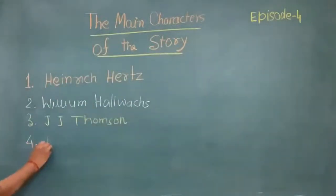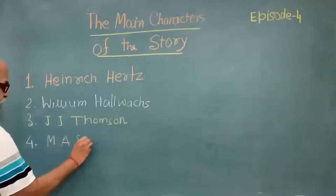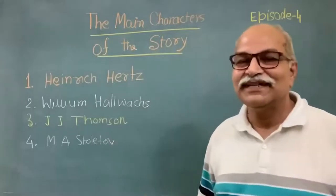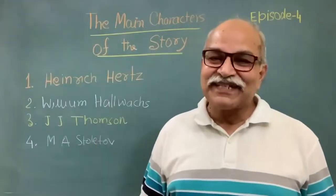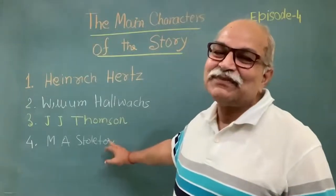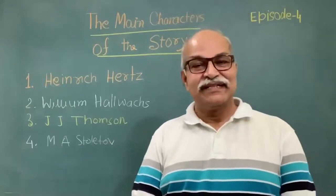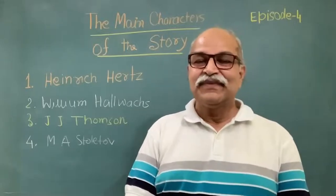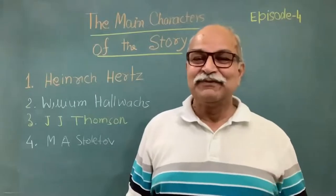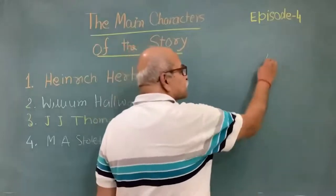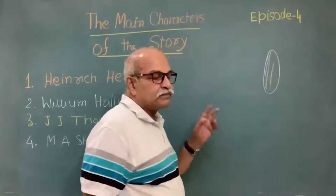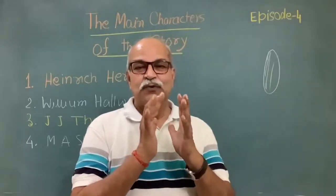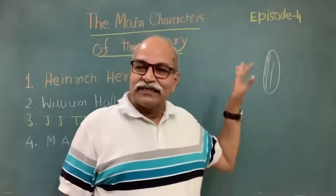At least one more scientist should be mentioned — a Russian physicist who did experiments on the photoelectric effect in 1888: M. A. Stoletov. He did a very simple but more quantitative experiment. His apparatus consisted of two metal circular discs of radius about 22 cm placed face to face — one a solid disc serving as the cathode, and the other a wire mesh serving as the anode.